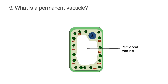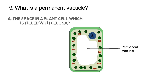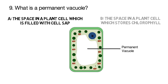Question number nine. What is a permanent vacuole? Is it the space in the plant cell which is filled with cell sap — that's option A? Or is it option B: the space in the plant cell which stores chlorophyll?